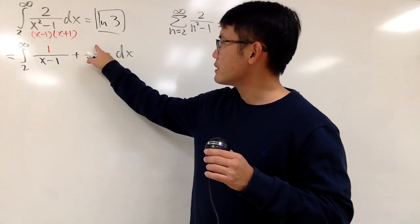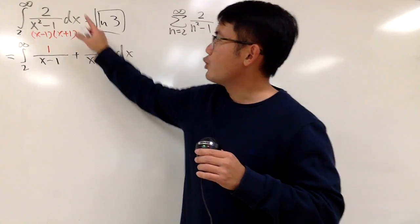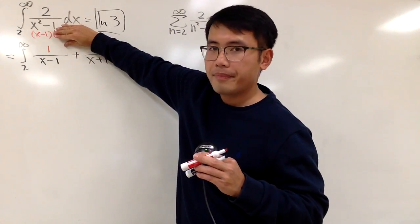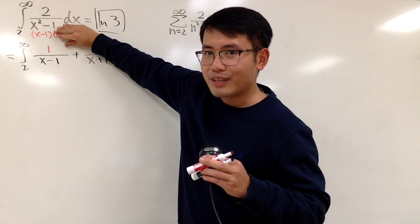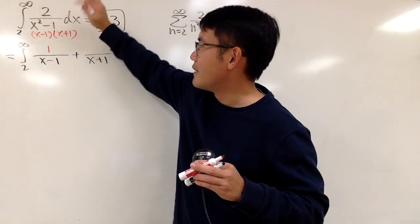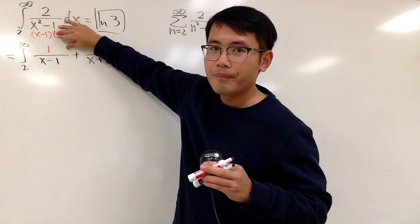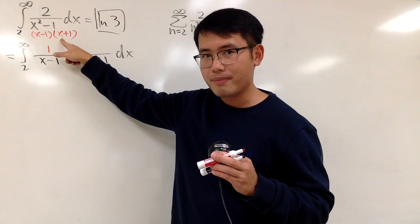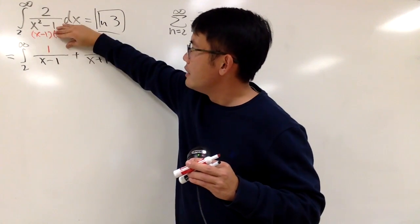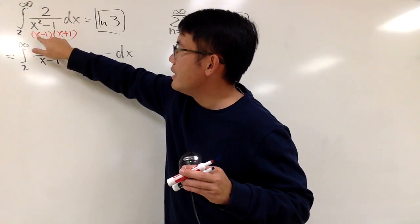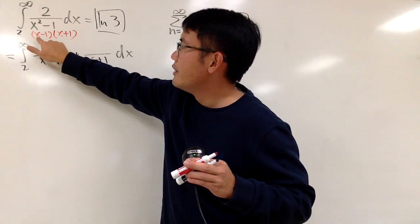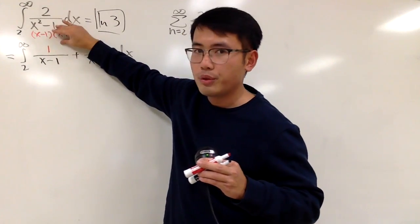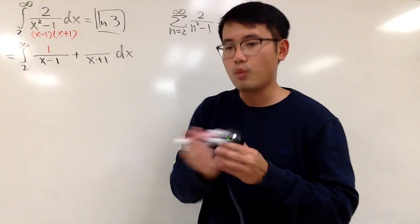To figure out the second number, you go back to the original, cover up (x + 1), and ask yourself: how can you make this factor equal to 0? The answer is x has to be negative 1. You plug in -1 here: -1 - 1 = -2, and 2 over -2 is -1. So you have -1 here.